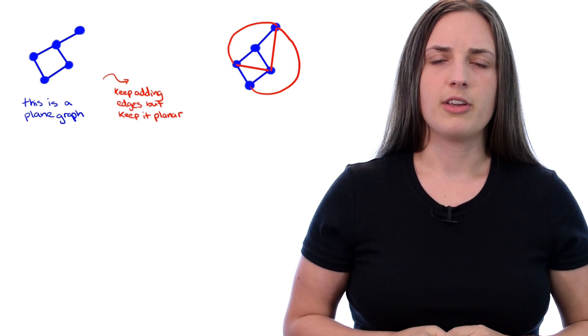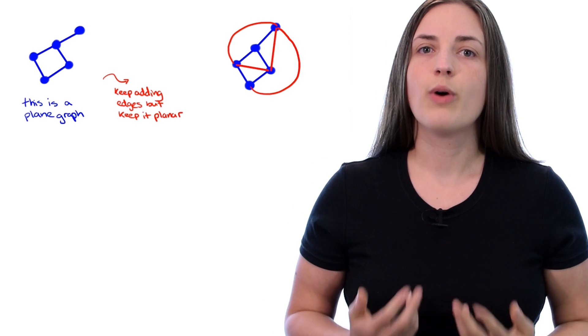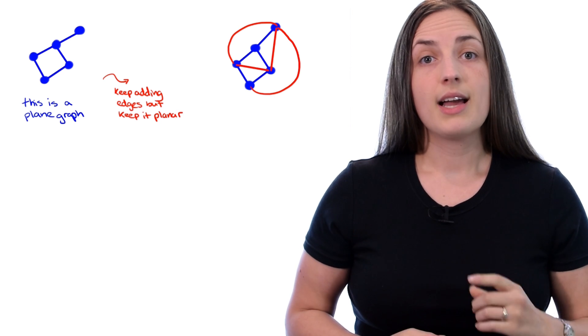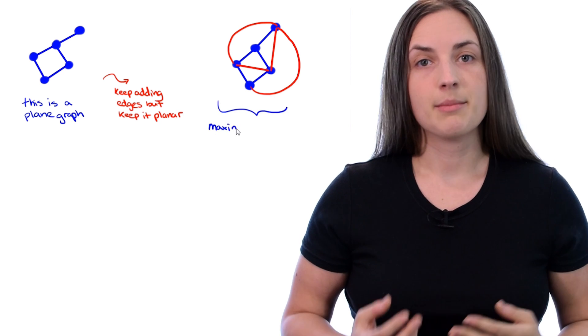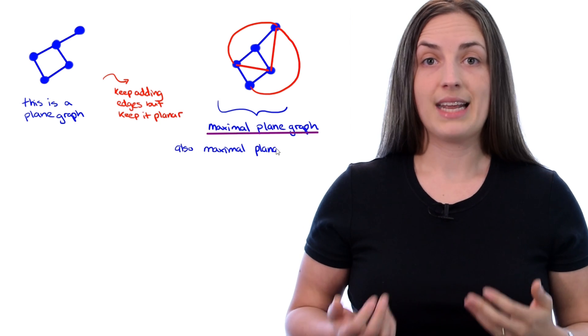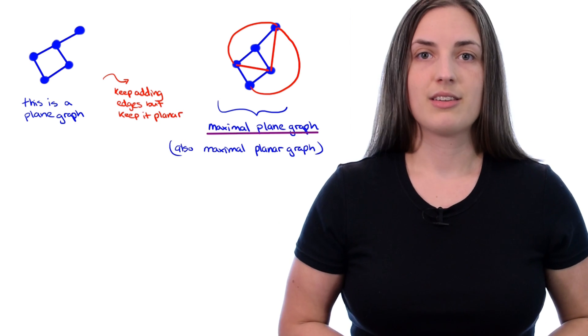We end up with this graph here. If we add any new edge, the graph will no longer be a plane graph. So that is what's called a maximal plane graph. It also happens to be a maximal planar graph, and this is a plane graph drawing of it.